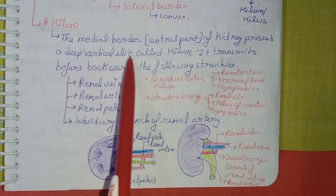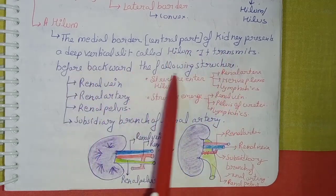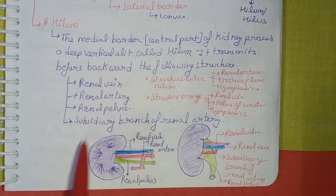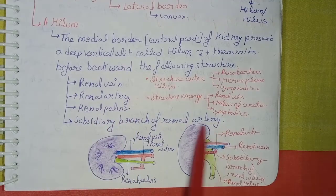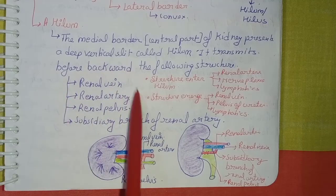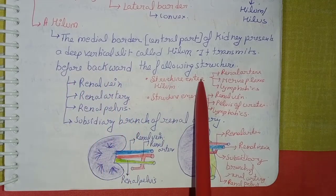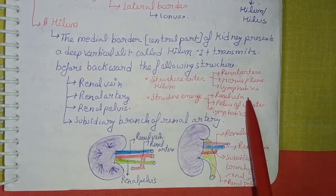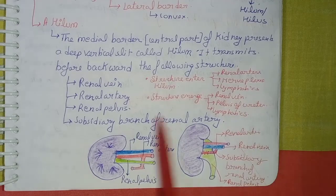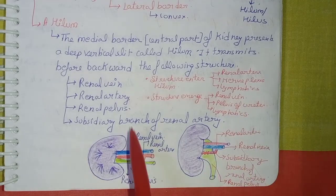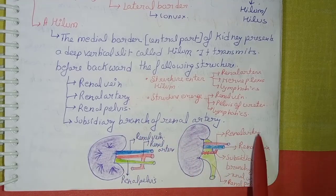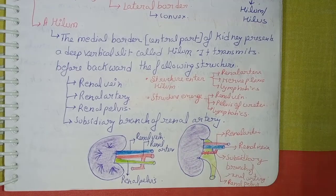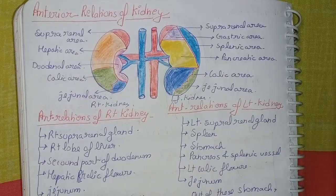Coming to the hilum: the central part of the medial border of the kidney presents a deep vertical slit called the hilum. It transmits, from before backward: renal vein, renal artery, renal pelvis, and subsidiary branches of the renal artery. Structures that enter the hilum are the renal artery, nerve plexus, and lymphatics. Structures that emerge from the hilum are the renal vein, pelvis of the ureter, and lymphatics, as clearly shown in the diagram.